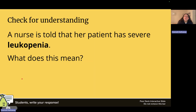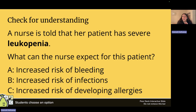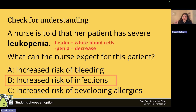Check for understanding: a nurse is told her patient has severe leukopenia — what does this mean? Leuko means leukocytes, which are white blood cells, and penia means decrease — so this is an abnormal decrease in white blood cells. In a patient with leukopenia, the nurse can expect an increased risk of infection because white blood cells fight infection, and with fewer of them, the immune system will not work as well.